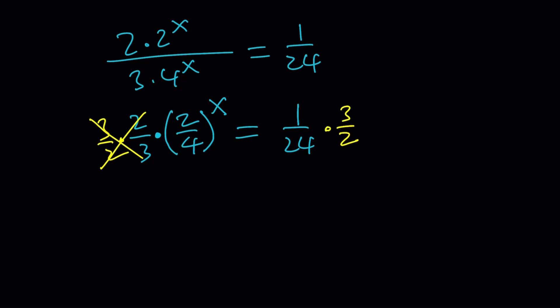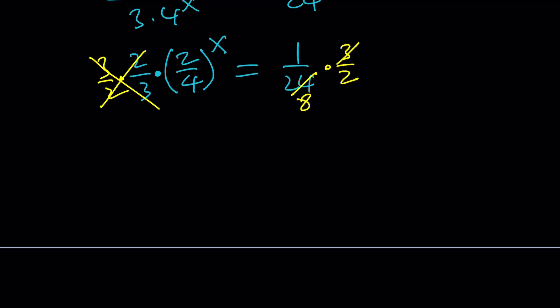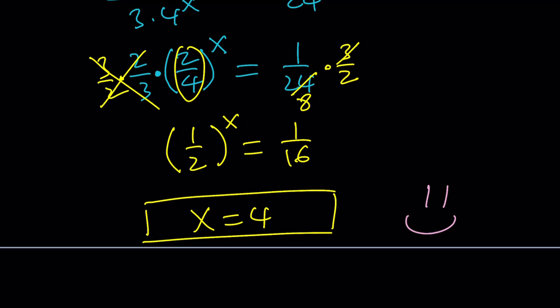These are going to cancel out. And here 3 goes into 24 8 times. So this gives us (2/4)^x = 1/8, which can be written as (1/2)^x = 1/8. And ta-da! From here, x = 3. You could get the answer directly without using any substitution at all.